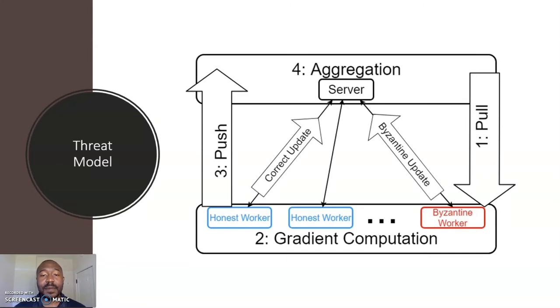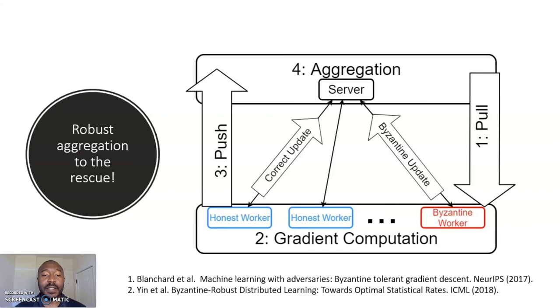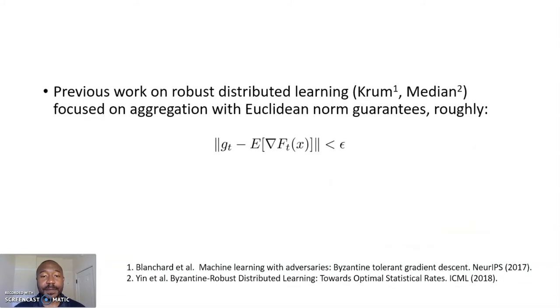We consider the threat model where a subset of workers are adversarial in the worst case, thus may send back arbitrary and potentially coordinated updates disguised as gradients. Early work in this area suggested that robust aggregation was a good way to deal with these issues. Some salient examples include median and crumb as robust aggregation strategies. Specifically, early work focused on robust aggregation such that the aggregated gradient is close to the expected gradient.